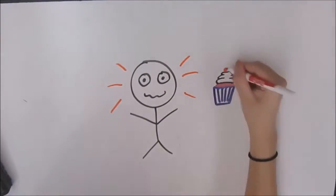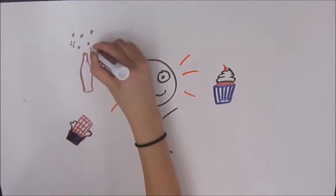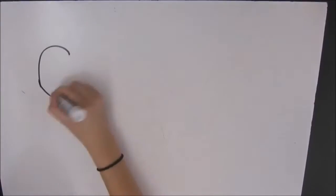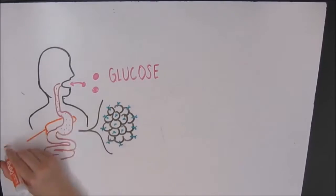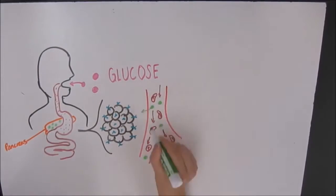Type 2 diabetes is a late-onset condition that affects the way your body metabolizes sugars. It causes the body to resist insulin or produce insufficient amounts of insulin, the hormone responsible for maintaining blood glucose homeostasis levels.